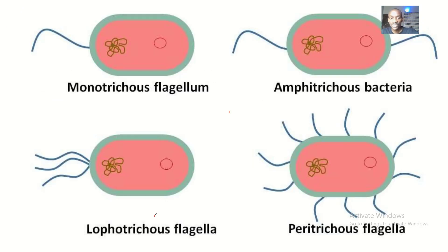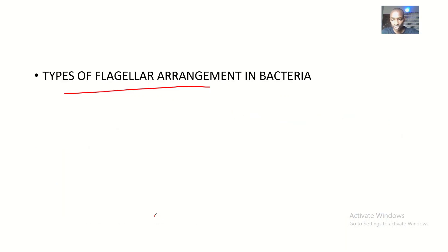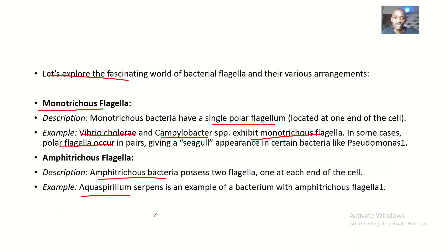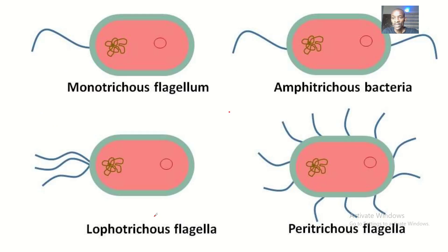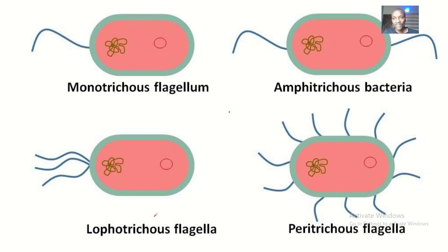So that covers the types of flagellar arrangements in bacteria. Continue learning about bacteria so you understand more, particularly this peritritus type, so that you have a solid foundation in elementary microbiology.